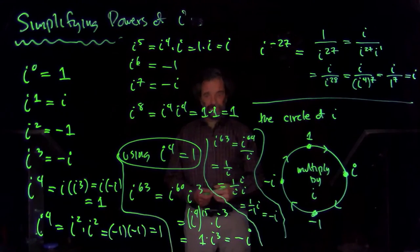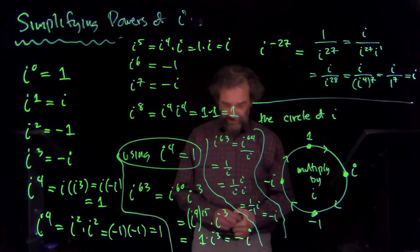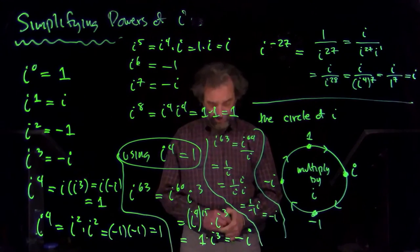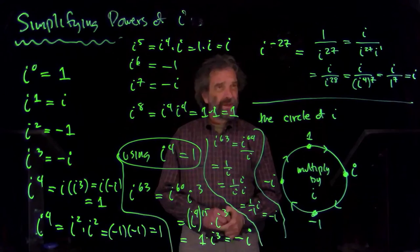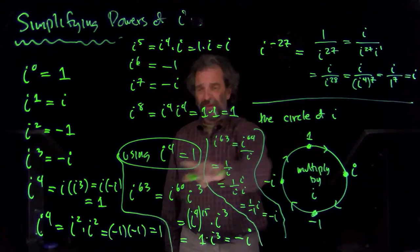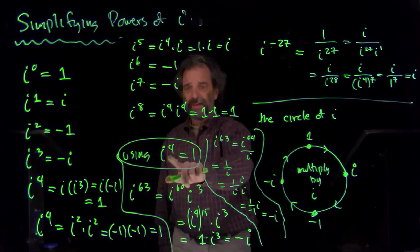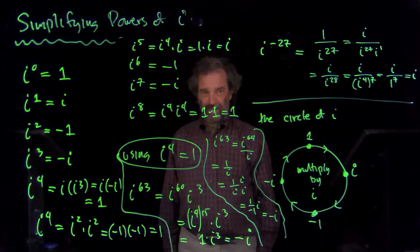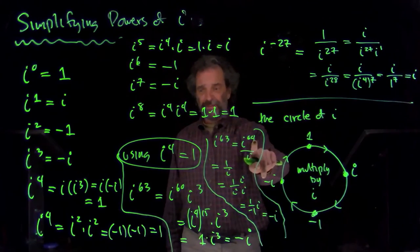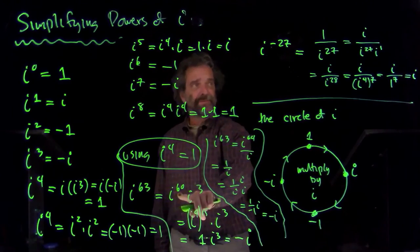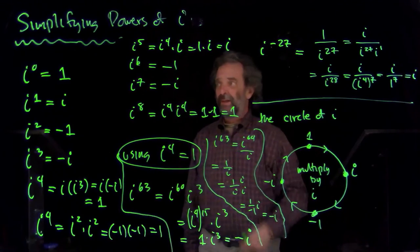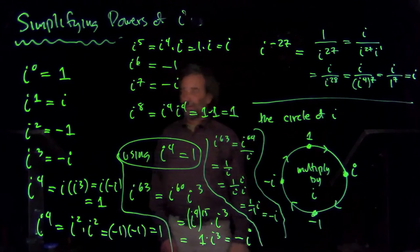So, there's a bunch of ways to handle these things. We're just trying to get an exponent on the i that's a multiple of four and use the exponent rules and the fact that i to the fourth is one to make our life simpler. So, whichever way. Here, sixty-four is a multiple of four. Here, sixty was a multiple of four. Here, twenty-eight is a multiple of four. And that was the key to simplifying the powers of i.